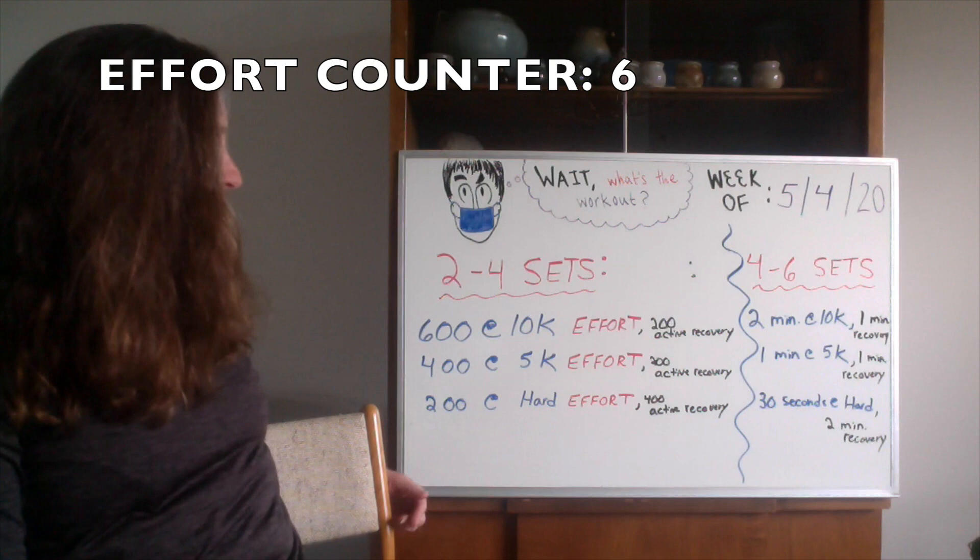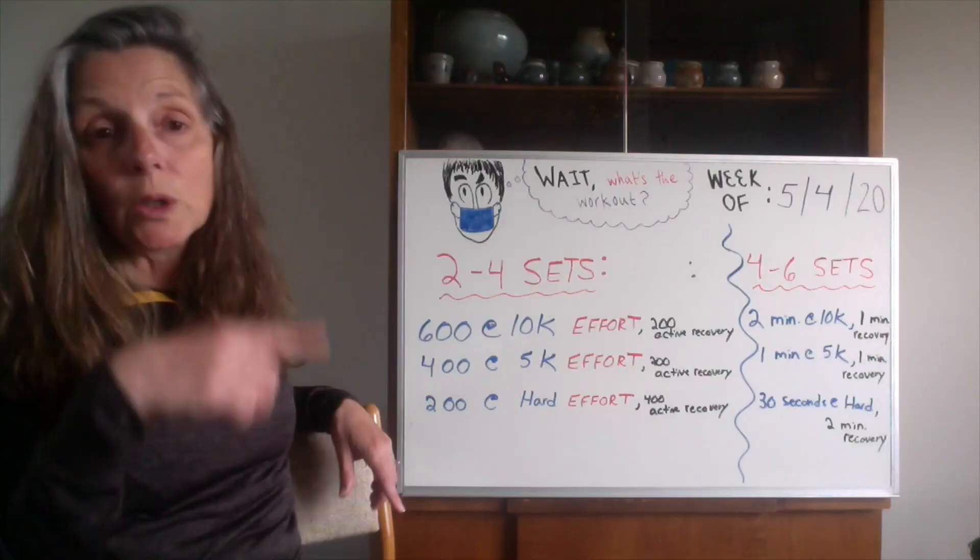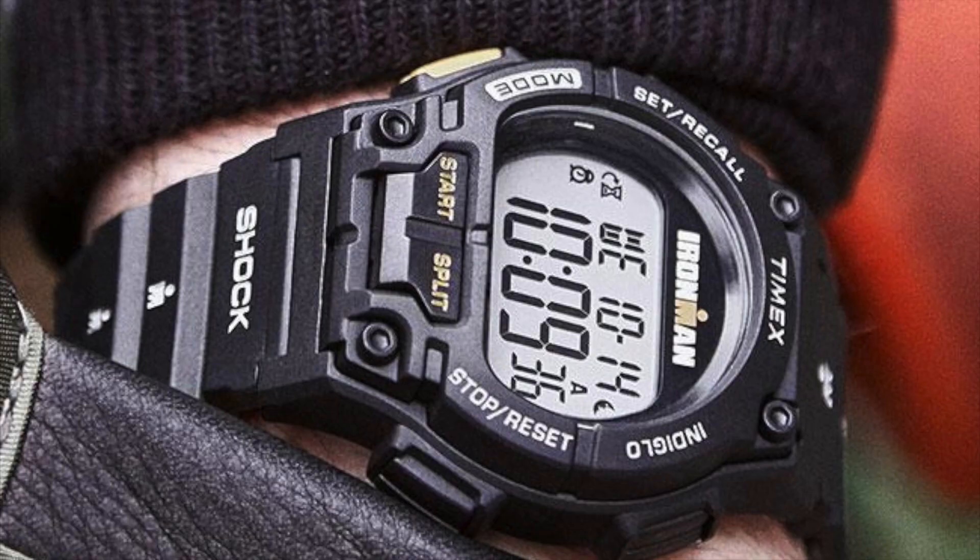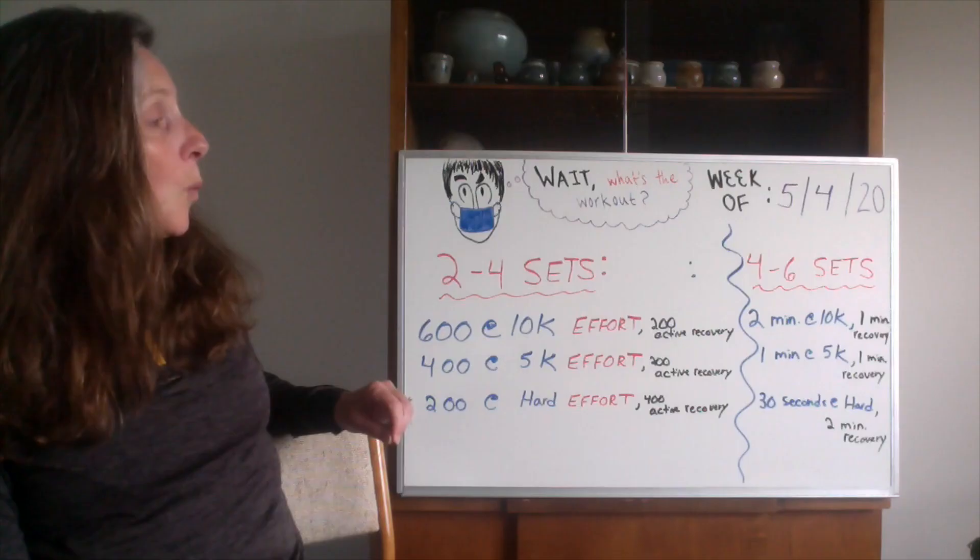600 at 10K effort, 400 at 5K effort, then 200 hard effort. After the 600 you have a 200 active recovery, after the 400 you have a 200 active recovery, and after the 200 you have a whole lap or 400 active recovery. So 6-4-2s all day long, two to four sets.